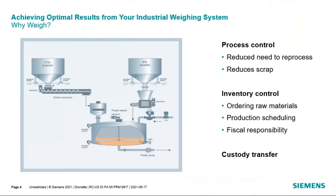So why is weighing important in the industrial environment? Weighing is typically used for one of three reasons: process controls — reducing the amount of scrap product produced or the need to reprocess a product because of inaccurate controls; inventory controls — knowing when to order new raw materials or measuring a finished product to schedule production; or fiscal responsibility — knowing what to report for the books. And finally, custody transfer — knowing how much to bill a customer based on weight.